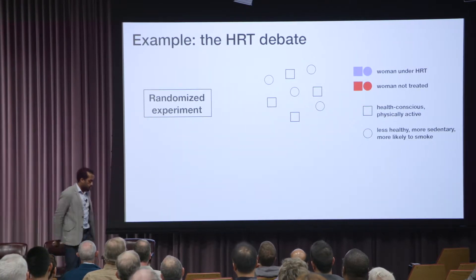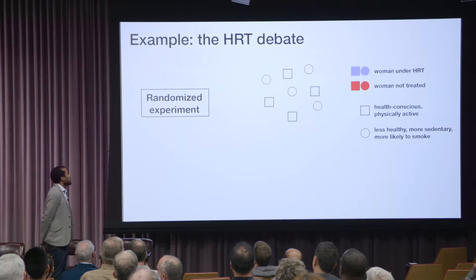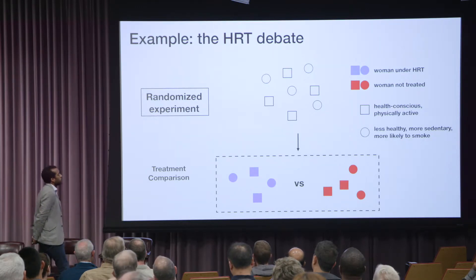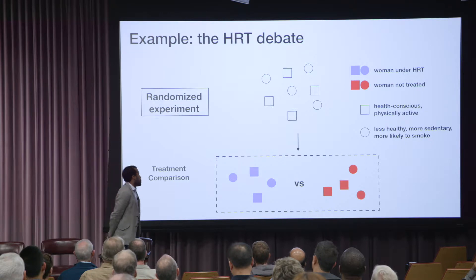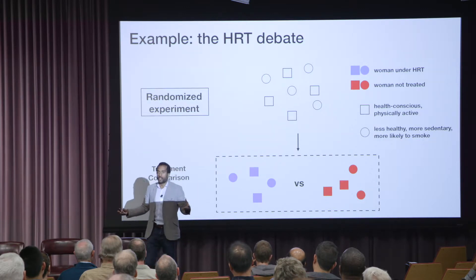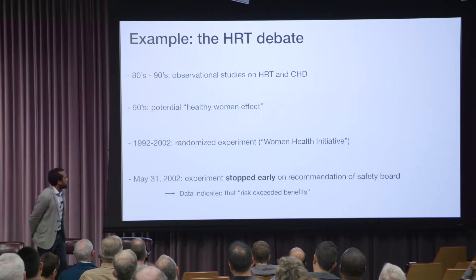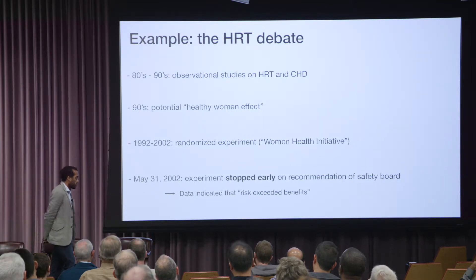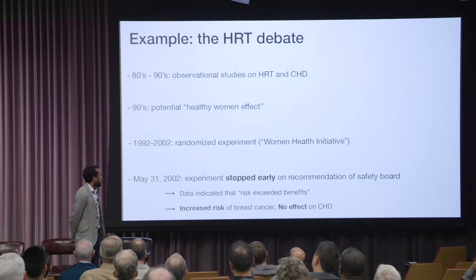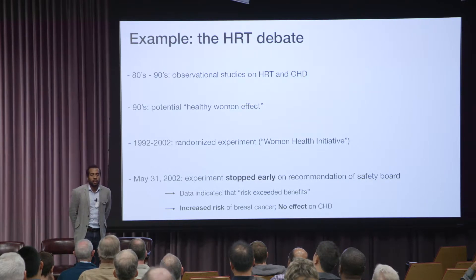What's the general idea of a randomized experiment? You first gather some women — some of them health-conscious and some not. Then you randomize: you randomly assign some of them to receive the intervention and some to not receive it. Then you compare. This looks very different from before, because now the two groups are roughly comparable on everything that's not the treatment. So they did this, and on May 31, 2002, the experiment was stopped early on the recommendation of the safety board because the data indicated the risks exceeded potential benefits. What they found was actually an increased risk of breast cancer and absolutely no effect on coronary heart disease.